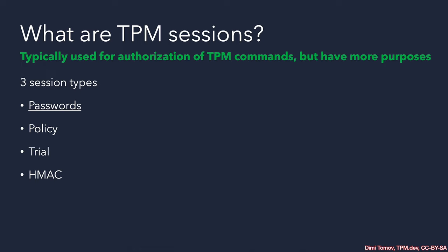On top of an HMAC session, we can have a policy, and this is then called a policy session. The policy session feeds itself with more than the auth value for entropy — it can take the state of the TPM and various other parameters, which we'll discuss more in our advanced course. The policy session can be used for authorization, but before we can perform any authorization, we would need to craft a policy digest. For that purpose, we have a trial session, which is used to generate the policy digest. In a way, a trial is a policy session only for computation.